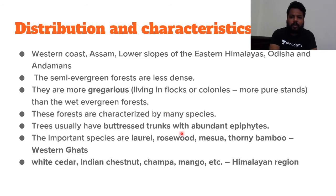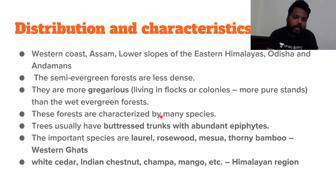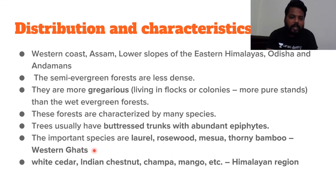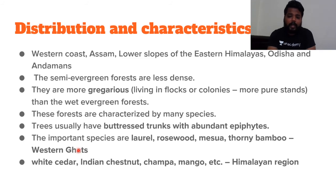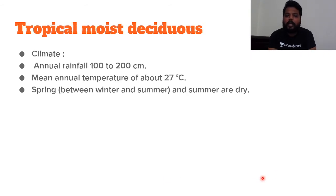Important species of tropical semi-evergreen forestry include rosewood, mesua, thorny bamboo, and laurel — abundant in the Western Ghats at lower altitudes. In the Himalayan region at slightly higher altitudes, we find white cedar, Indian chestnut, champa, and mango.